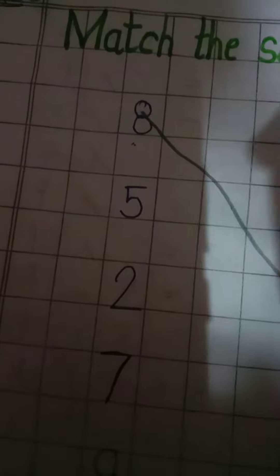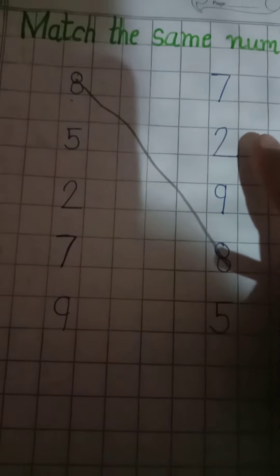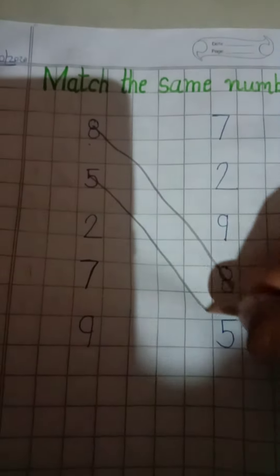Now, one sleeping line, one standing line and curve. Which number is this? Number 5. Where is the number 5? It's number 5. Yes, it's a number 5. Match the 5 with 5.